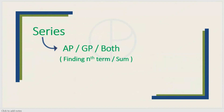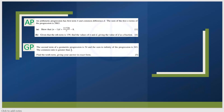Next, you will definitely get a question from series — one question from arithmetic or geometric progression. Some questions have both arithmetic as well as geometric. The questions will be like finding the nth term or finding the sum of the series, and you will get around a 6 to 8 mark question from series. You may also be asked to find the sum to infinity of the progression.